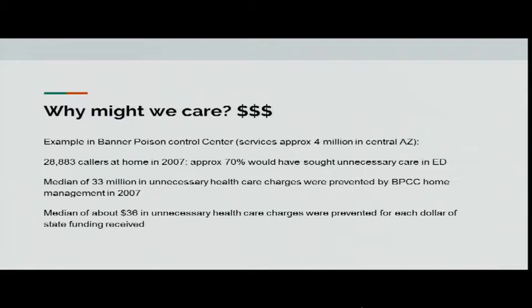Why should we care? A lot of it is about funding and cost savings. Many calls to poison control come from concerned parents at home. If the patient can be safely observed at home, you're saving costs on ambulance transport, emergency visits, and hospitalizations. As an example, the Banner Poison Control Center in Arizona covers approximately 40 million people. They received 28,000 calls at home in 2007, and approximately 70% of those callers would have sought unnecessary ED care. This prevented a median of $33 million in unnecessary healthcare charges, with about $36 in unnecessary health care charges prevented for each dollar of state funding received.